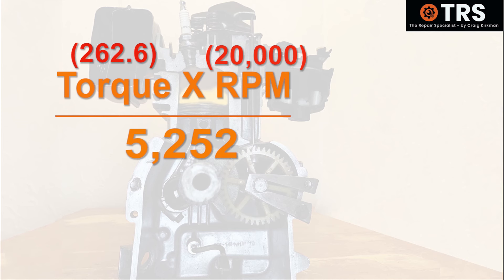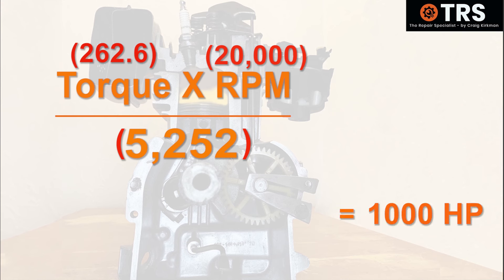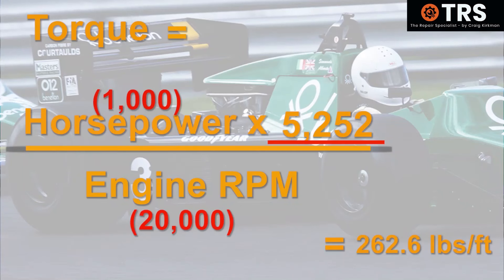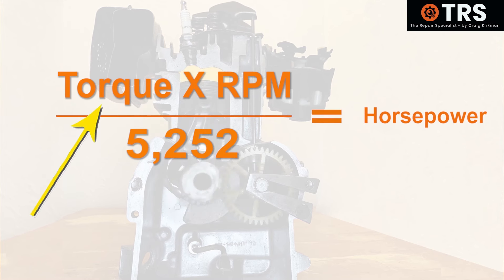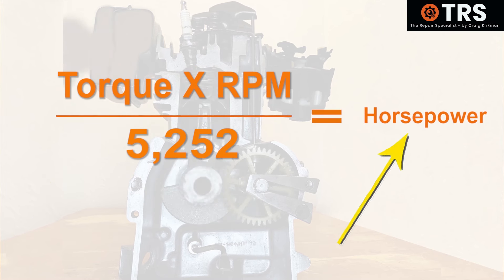We then divide by 5252, and this brings out the figure of 1000 horsepower — the same value we started with. Coming back to the thousand horsepower figure we knew at the beginning confirms that the math we've been doing is correct. Torque is a necessary part of the equation in calculating horsepower.